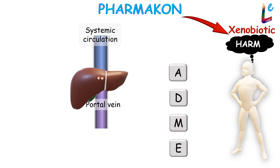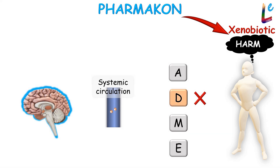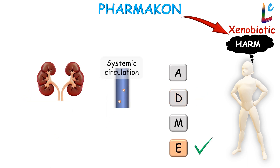Even if the drug enters the systemic circulation, distribution into certain organs can still be prevented — for example, by the blood-brain barrier. And of course, the excretory organs, especially the kidneys, will try their best to excrete the unchanged drug and its metabolites at the earliest.